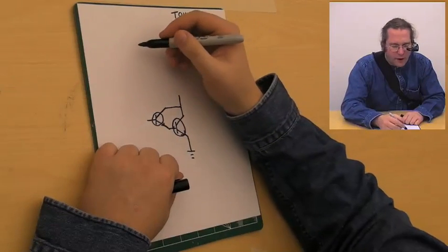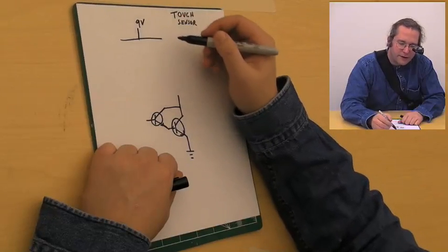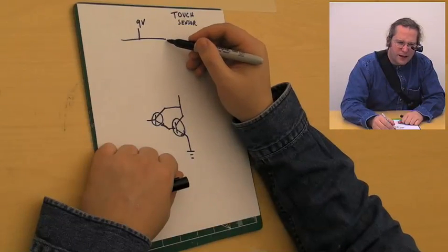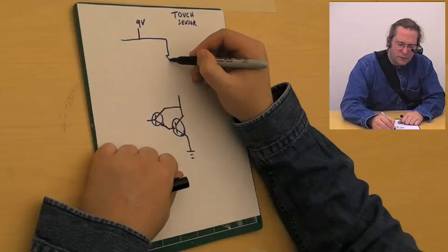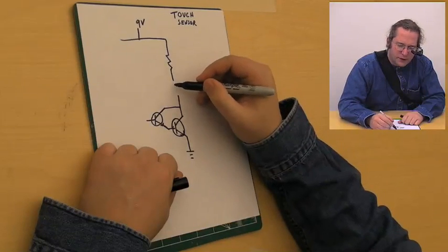Now for our purposes, we're going to use a 9-volt battery coming at the top here, and we're just going to have a 1 kilo-ohm resistor here so we don't have too much current coming through at once, so we can see what's going on.